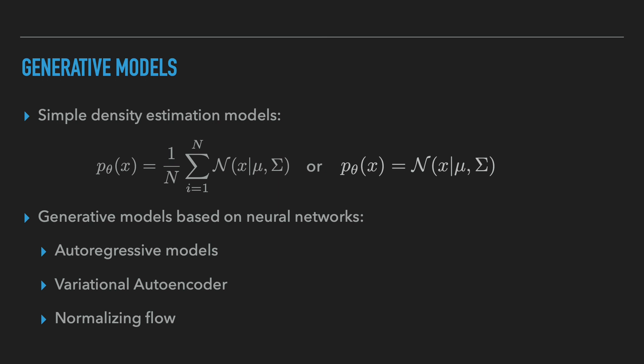Deep generative models, or DGMs, are models where the data distribution is approximated using a neural network. These models often involve millions of parameters and are very flexible. In the scope of this talk, we are interested in three types of DGMs: autoregressive models, variational autoencoders, and normalizing flows. Now we'll briefly discuss their structure.